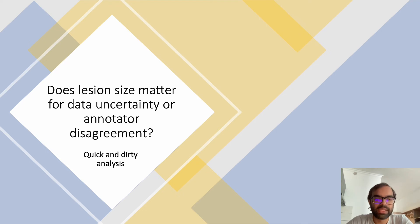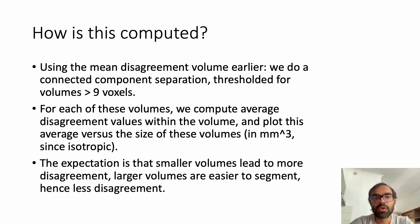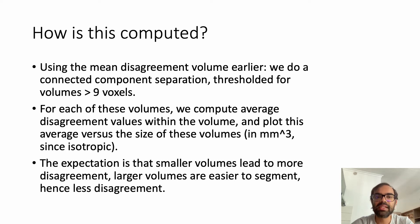This brings us to the second question: does lesion size really matter for data uncertainty? This is a quick-and-dirty analysis. We take the mean disagreement volume or data uncertainty computed earlier with the unweighted annotator variance and do a connected component separation thresholded by nine voxels. What we get is a set of connected components per subject, and for each connected component we compute the average disagreement values within that volume — giving us a list of connected components, their volumes, and the average disagreements within them. The expectation is that smaller volumes lead to more disagreement and larger volumes are easier to segment.